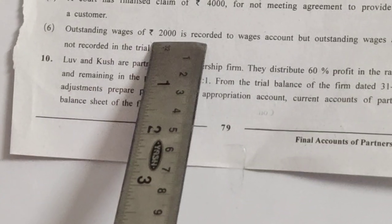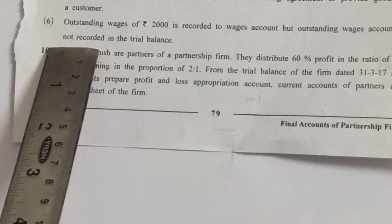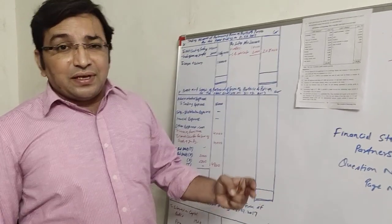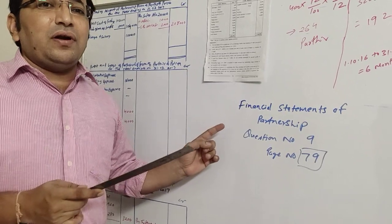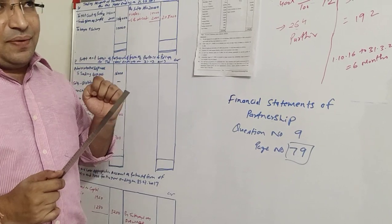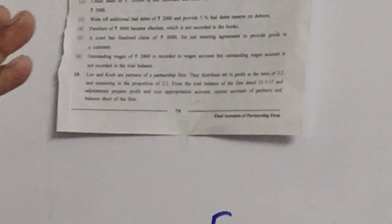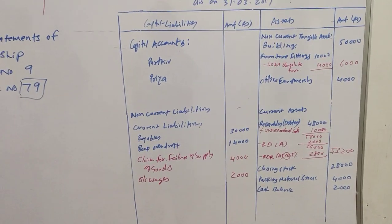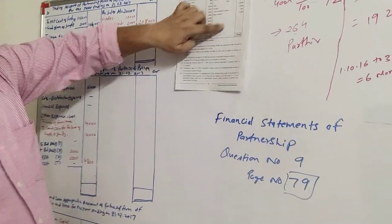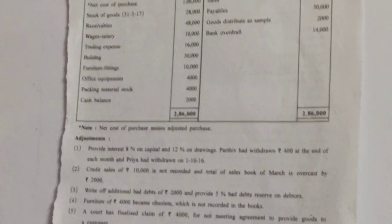Last adjustment: outstanding wages of Rs.2,000 are recorded to the wages account, but the outstanding wages account is not recorded in the trial balance. This is another adjustment of Rs.2,000 with only one effect, as discussed — there will be at least two such single-effect adjustments. Wages of Rs.2,000 are already added to wages, so we don't add to wages again. We will write it at the liability side of the balance sheet under current liabilities: outstanding wages Rs.2,000. That covers all adjustments — there are no hidden adjustments in this sum.